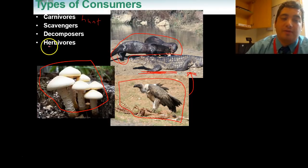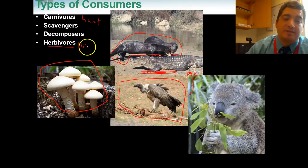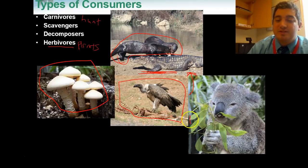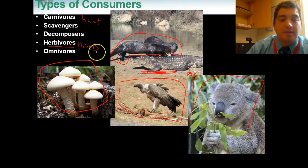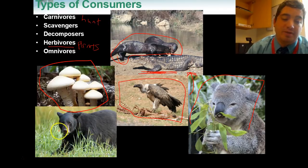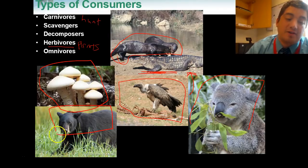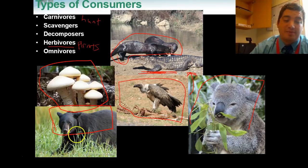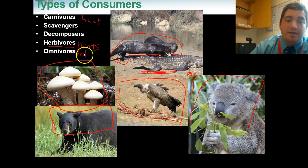The next type is an herbivore — anything that eats plants. A perfect example is this cute and cuddly koala bear. Koala bears only eat plants; they don't eat meat. And when they're not eating plants, they take naps in trees. The next type is an omnivore — things that eat both plants and meat. A perfect example is a bear, like this black bear. If he's hungry, maybe he'll eat some chicken, but they'll also eat a lot of plants, grass, berries, fruits, and nuts. So an omnivore eats both plants and animals.